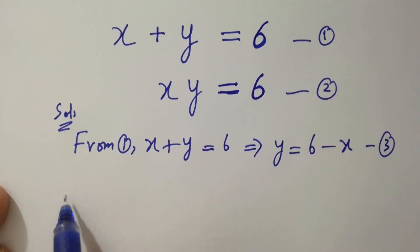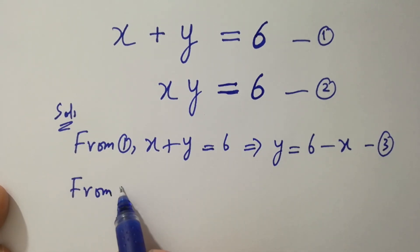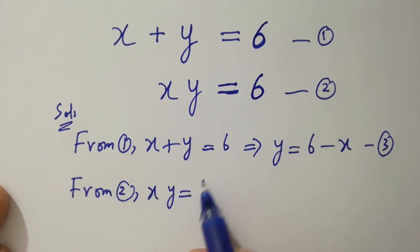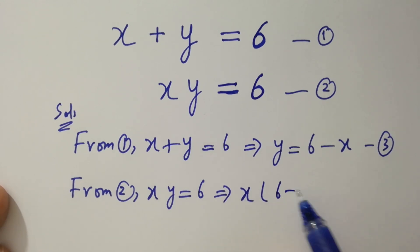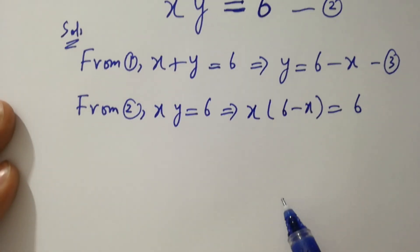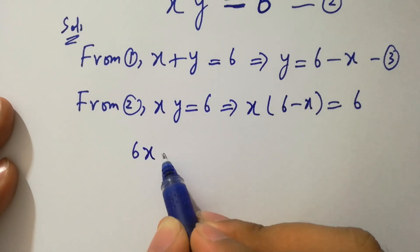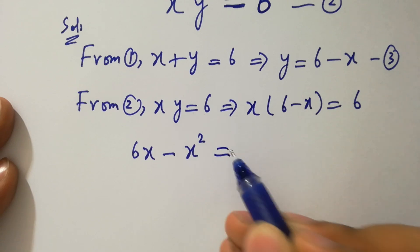Now from the second equation, xy equals 6. Put the value of y — y is 6 minus x — so x times (6 minus x) equals 6.